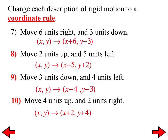Let me change number 10 to just say 4 units up. How does that change the translation? If there's no x-movement, we don't need to write x plus 0. So it would just be (x, y) → (x, y+4), meaning there's no change in the x-value.